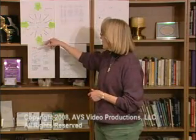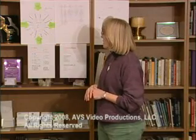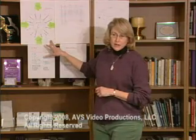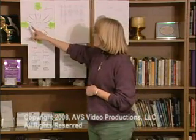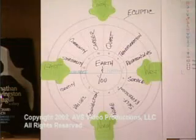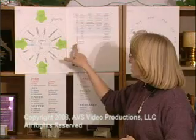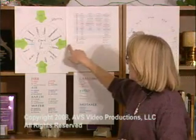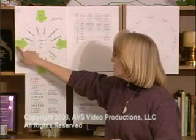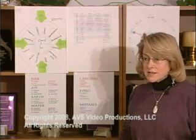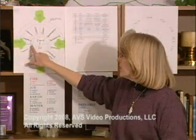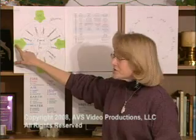One thing that is different about this map than any other map you look at is that east is on the left, which makes north down here and south and west over here — so it's just a different representation. The line that goes across the center is the horizon line, and to the left is where the sun was coming up.